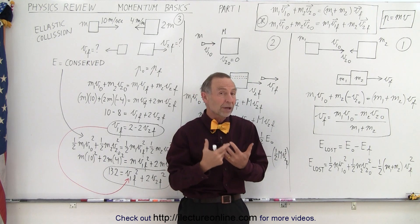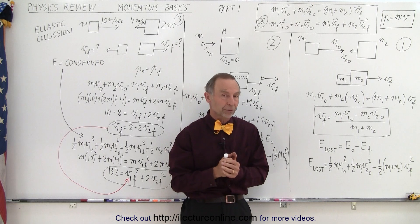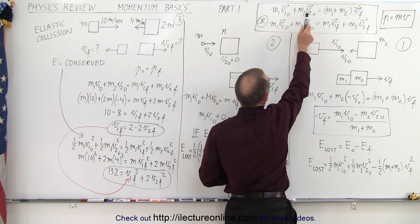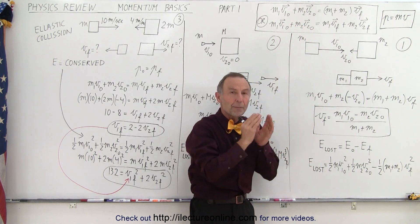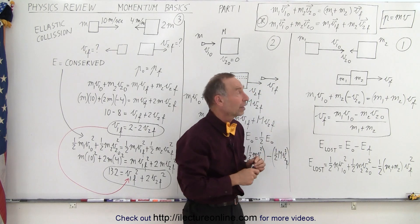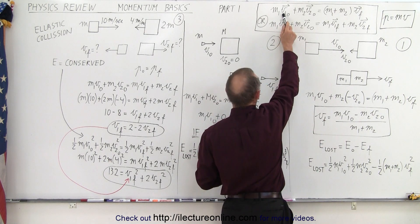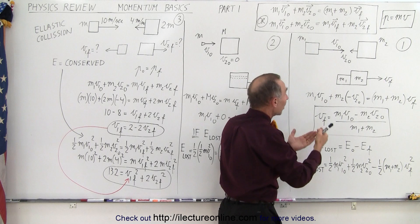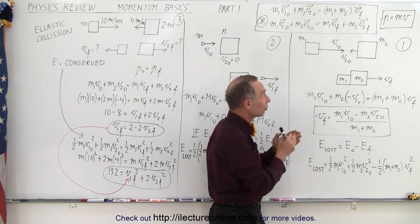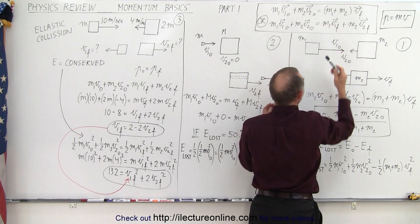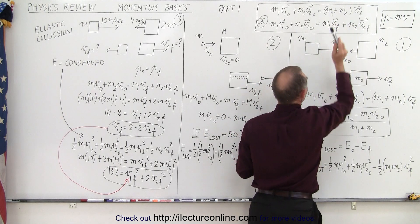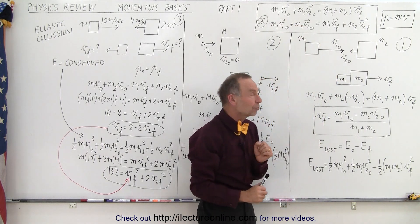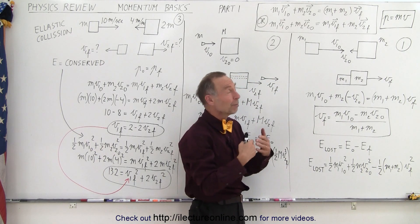The type of problems you could run into are illustrated in these three examples. The principle is that the initial momentum will always equal the final momentum — momentum is always conserved through collisions. So M1V1 plus M2V2 equals the mass times the final velocity. When the two masses stick together, the sum of the two masses times the final velocity equals the sum of the initial momenta.